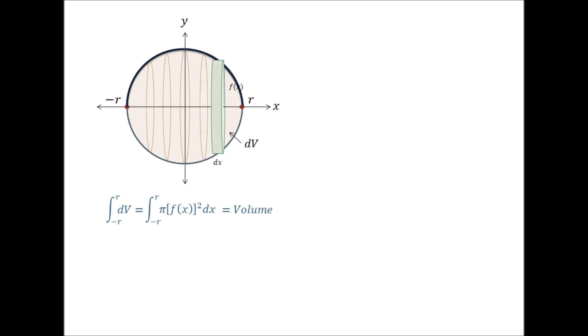And now that we have our integral, we plug in for f of x, and we get the volume equal to the integral from negative r to r of pi times the radical r squared minus x squared, squared dx. Seeing that the square and the radical cancel, and that we can pull the constant pi out, we then get the following.